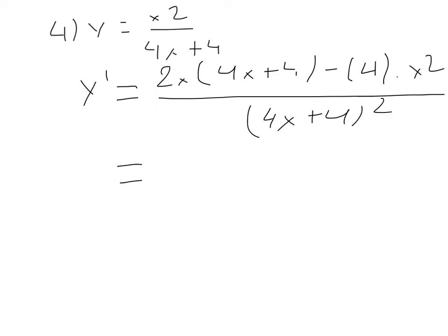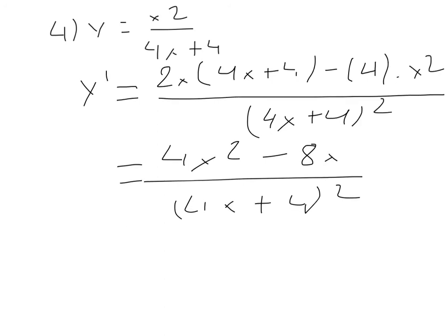And then if I simplify it, it will be 4x² minus 8x over (4x plus 4)². And that's where I don't know how to find the critical number of it. Thank you.